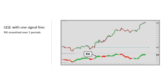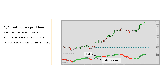The base plot here is a RSI smoothed over five periods, supplemented by a signal line. We're looking at a five-minute chart of the NASDAQ futures contract, and I've penciled in the irregular open here just to give some context. The signal line is composed by a moving average true range ATR, and by smoothing the RSI and the signal line, the QQE becomes less sensitive to short changes in volatility.